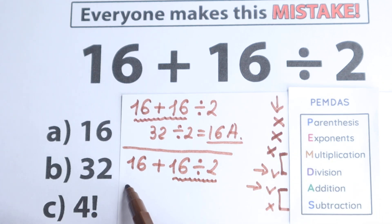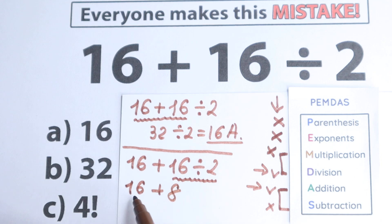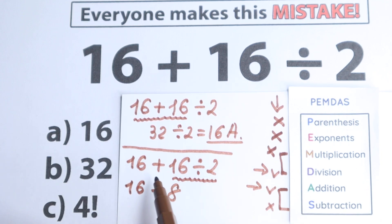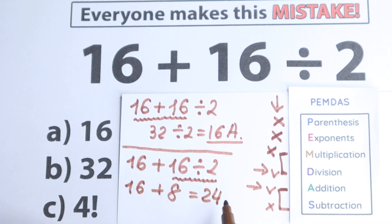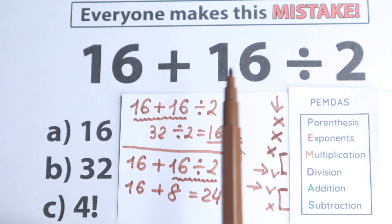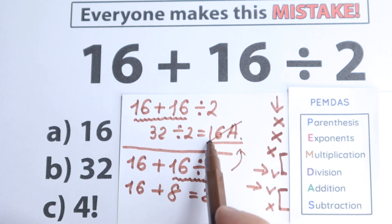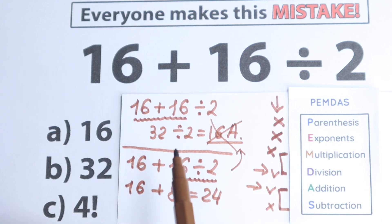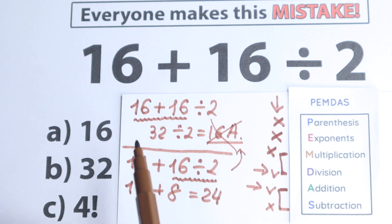So we have 16 plus 16 divided by 2: first, 16 divided by 2 equals 8. Then 16 plus 8 — this is our last step, addition — and 16 plus 8 equals 24. A lot of students make the common mistake of going back to the answer 16, which is the most obvious answer. But starting with addition is absolutely incorrect, because we cannot add and then divide — addition comes after division.